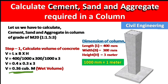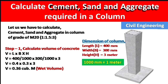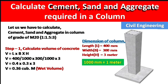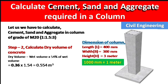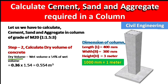Calculating the volume: 0.4 × 0.3 × 3 = 0.36 cubic meters. So the volume of the column is 0.36 m³. Note that cubic meter and meter cube are the same. This is the wet volume of concrete, and now we move to Step 2.